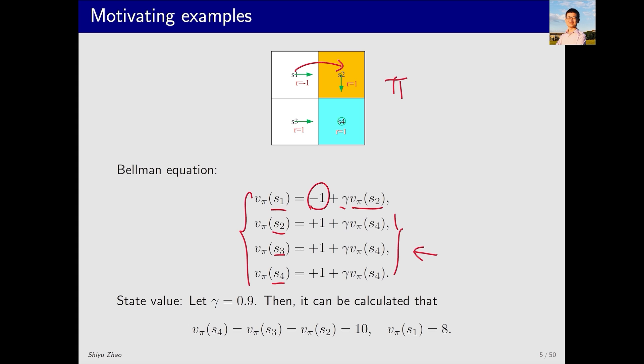This set of equations can be solved in many ways, since it forms a system of linear equations. If we set gamma to 0.9, we can calculate these state values. You can do the calculations on your own. I directly present the results here.